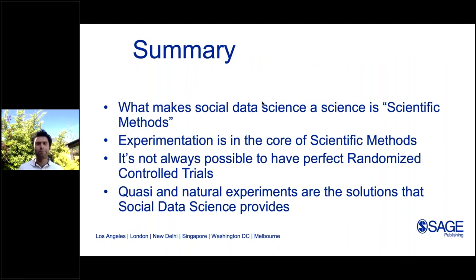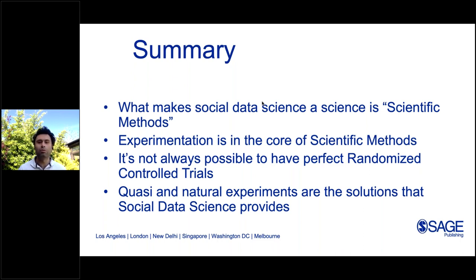Let me quickly summarize. What makes social data science a science is scientific methods. Experimentation is the core of the scientific method. However, it's not always possible to have perfect randomized control trials. That's why we use quasi- and natural experiments as a solution to enable us to still infer causalities and still understand human social behavior in social data science. Thank you very much.